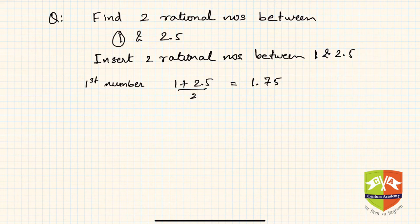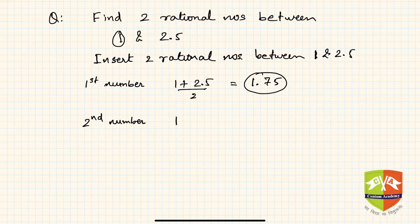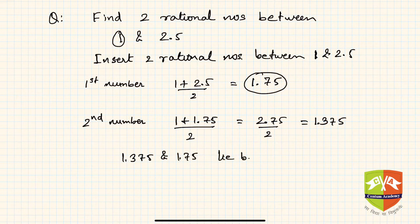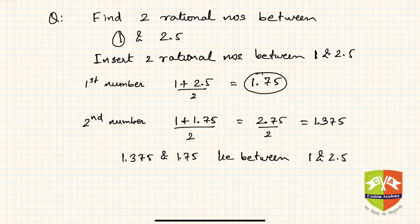For the second number, take one of the original given numbers — say 1 — and pair it with the newly found number 1.75 instead of 2.5, then repeat the process. So the second number is (1 + 1.75) / 2 = 2.75 / 2 = 1.375. Hence 1.375 and 1.75 both lie between 1 and 2.5. You could also have taken 2.5 and 1.75 and divided their sum by 2 to get another such number.